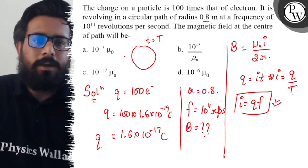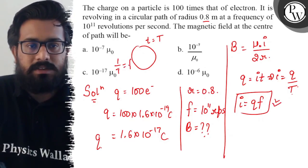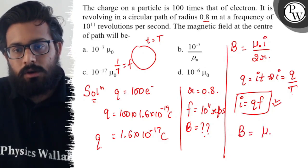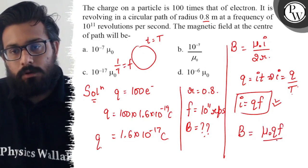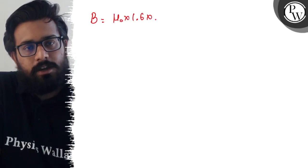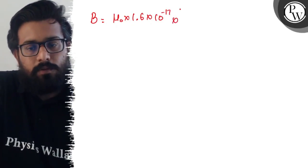So I can be written as qf upon 2πr. Now just put the values here. B can be written as μ₀q—q value is 1.6 × 10^-17, frequency is 10^11—upon 2 into 0.8.